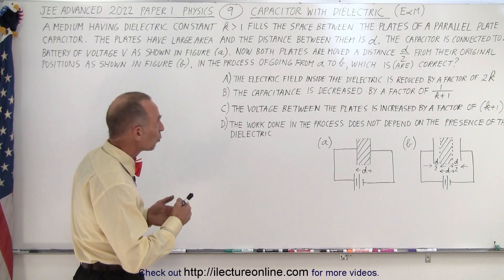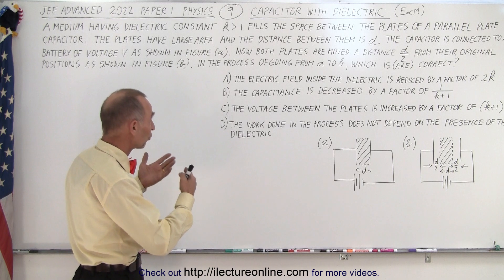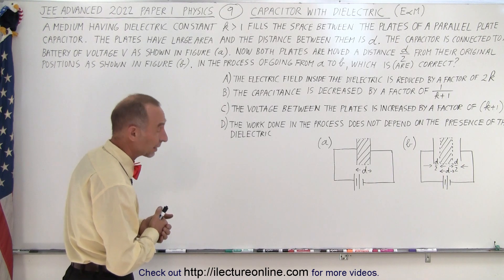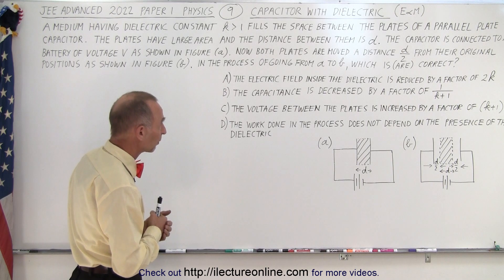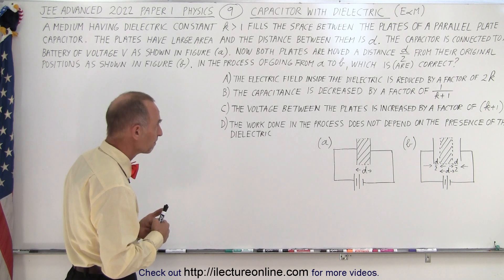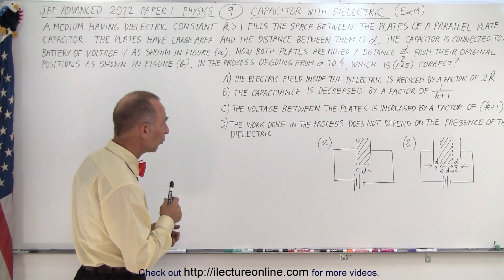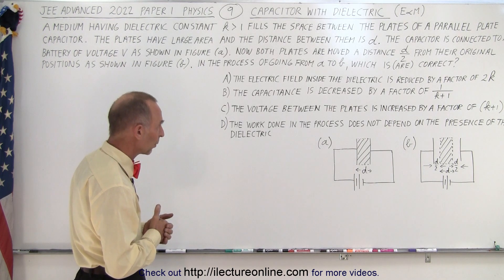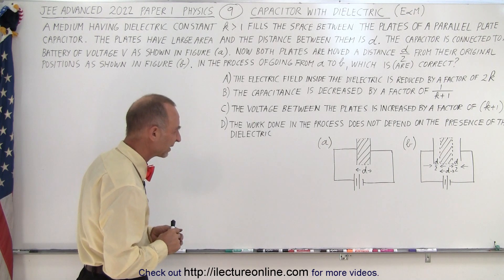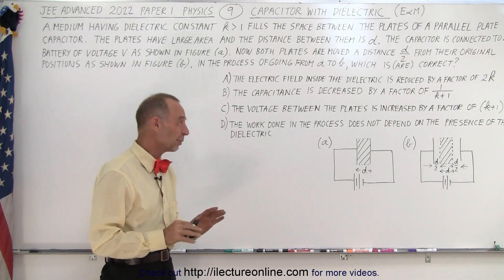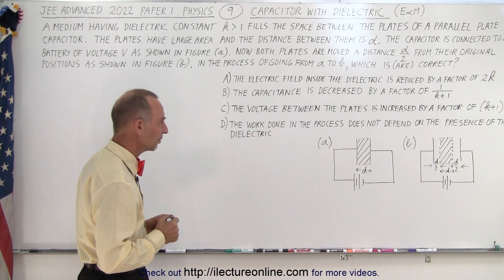In the process of going from A to B, which statements are correct? They give us four statements and we have to identify which ones are correct — it could be multiple. First, the electric field inside the dielectric is reduced by a factor of 2k. Second, the capacitance is decreased by a factor of 1 over k+1. Third, the voltage between the plates is increased by a factor of k+1. And fourth, the work done does not depend on the presence of the dielectric. That last one seems strange — I would almost right away say no, but we'll hold off and see.